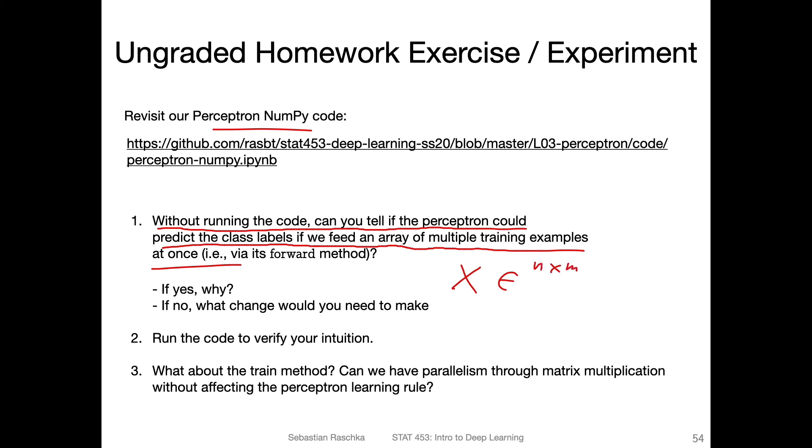If we have a design matrix of dimensionality n times m for testing, would it be able to run after training? If yes, why? If not, what change to the code have we have to make? You can think of this, and then you can actually run the code with design matrix as input for prediction and see whether your intuition was correct. Feel free to open a discussion on Piazza about that.